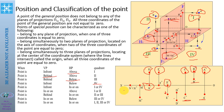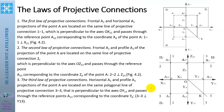Point N lies on the intersection line of the planes — on a coordinate axis. In this situation, both the horizontal and frontal projections must be drawn on the X-zero axis.